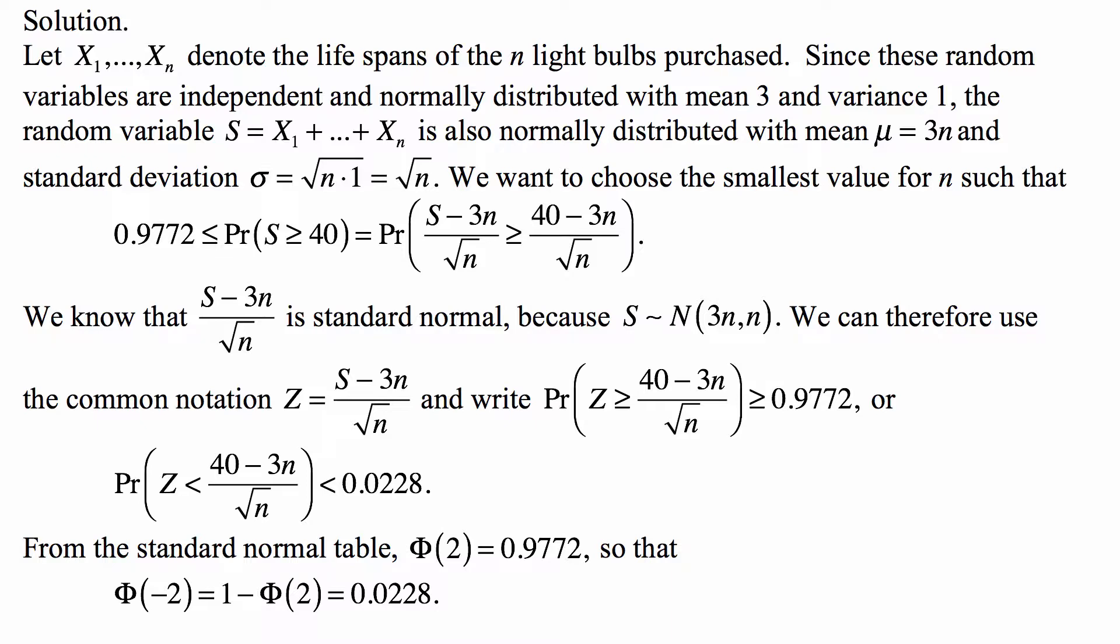We want to choose the smallest value for n such that the probability that S is greater than or equal to 40 is greater than or equal to 0.9772. But probability that S is greater than or equal to 40 is the same as probability that (S - 3n) / √n is greater than or equal to (40 - 3n) / √n.